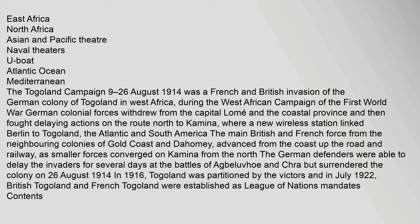The main British and French force from the neighboring colonies of Gold Coast and Dahomey advanced from the coast up the road and railway. As smaller forces converged on Kamina from the north, the German defenders were able to delay the invaders for several days at the battles of Agbeluvho and Chra, but surrendered the colony on 26 August 1914. In 1916, Togoland was partitioned by the victors, and in July 1922, British Togoland and French Togoland were established as League of Nations Mandates.